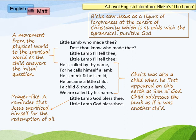Blake saw Jesus as a figure of forgiveness at the centre of Christianity, which is at odds with the punitive, tyrannical God represented in some of the experience poems. As we move into the second part of the poem, there is a movement from the physical world of nature to the spiritual world, going deeper into the idea of the creator and Jesus Christ. Christ was also a child when he first appeared on earth as Son of God, so the child addresses the lamb as if it were another child. As the poem finishes, it's very prayer-like — the 'God bless thee' bit is a reminder that Jesus sacrificed himself for the redemption of all. Lambs also carry this motif of being quite sacrificial.